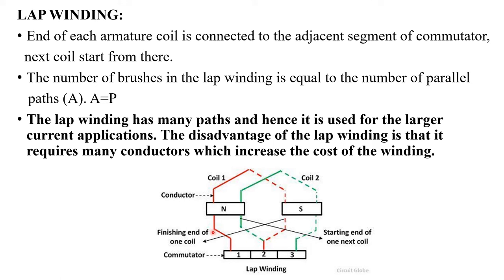This will be the starting end of coil 1, and this portion will be the finishing end of the first coil. This region will be the starting end of the next second coil, and this will be the finishing end of the second coil. In lap windings, the number of parallel paths will be equal to the number of poles. Due to the presence of more parallel paths, lap windings are normally used for high current, low voltage applications.